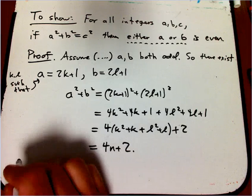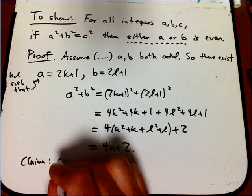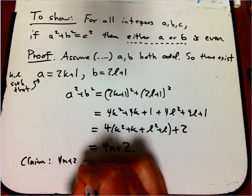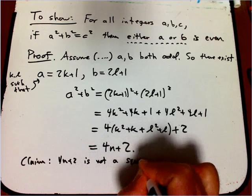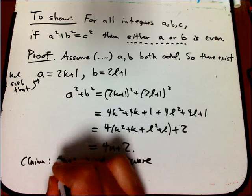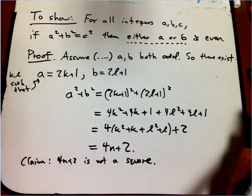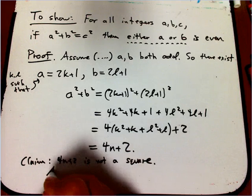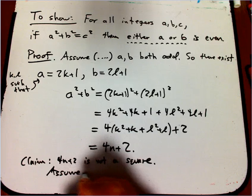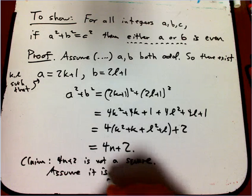So here's another little proof by contradiction. 4n plus 2 is not a square. Well, I guess we don't really have to do it by contradiction. Well, let's do it just for the sake of it. So assume it is. So here we're doing a little proof by contradiction within a bigger one. Assume it is.